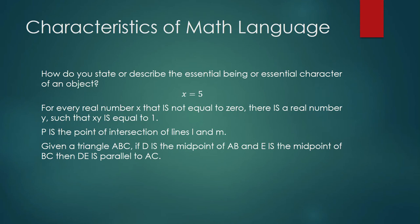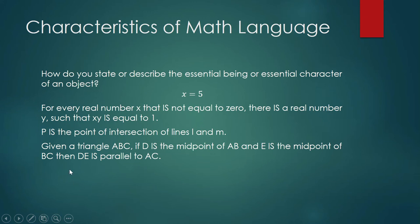A line is not capable of action because it is not a living thing. So how do you state the essential being of a mathematical object? You simply use the word 'is.' For example: 'x is equal to 5'; 'for every real number x not equal to zero, there is a real number y such that xy is equal to 1'; 'P is the point of intersection of lines L and M'; and, given triangle ABC, if D is the midpoint of AB and E is the midpoint of BC, then DE is parallel to AC — this last statement is the midline theorem.